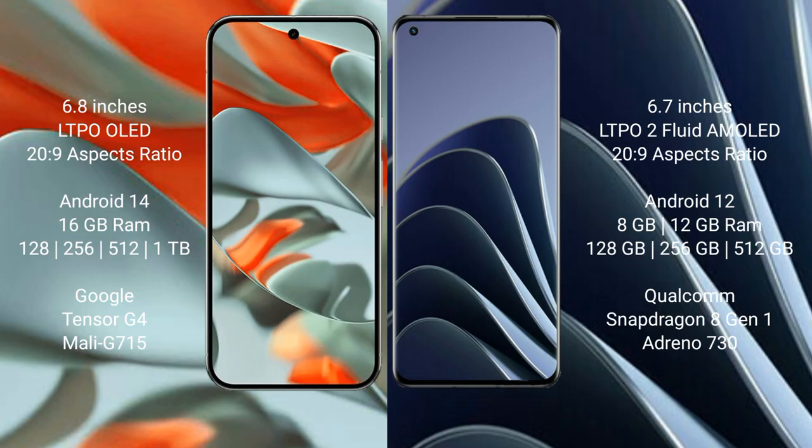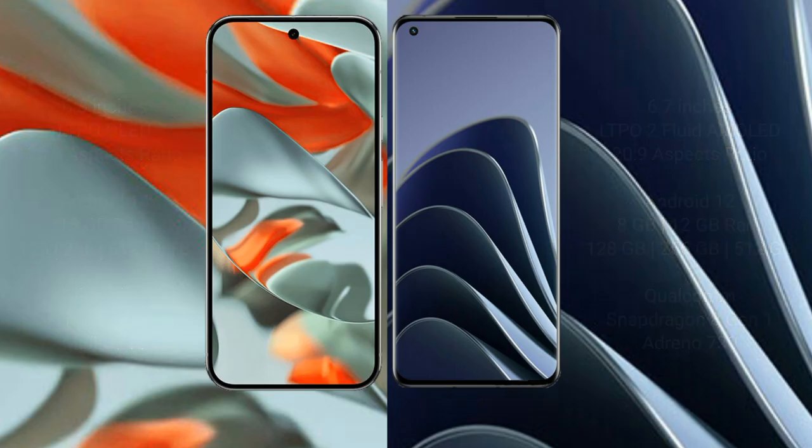Google Pixel 9 Pro XL comes with 16GB RAM and 128GB or 256GB internal storage, powered by the Google Tensor G4 processor and Mali 715 GPU. OnePlus 10 Pro comes with 8GB or 12GB RAM and 128GB or 256GB internal storage, powered by the Qualcomm Snapdragon 8 Gen 1 processor and Adreno 730 GPU.